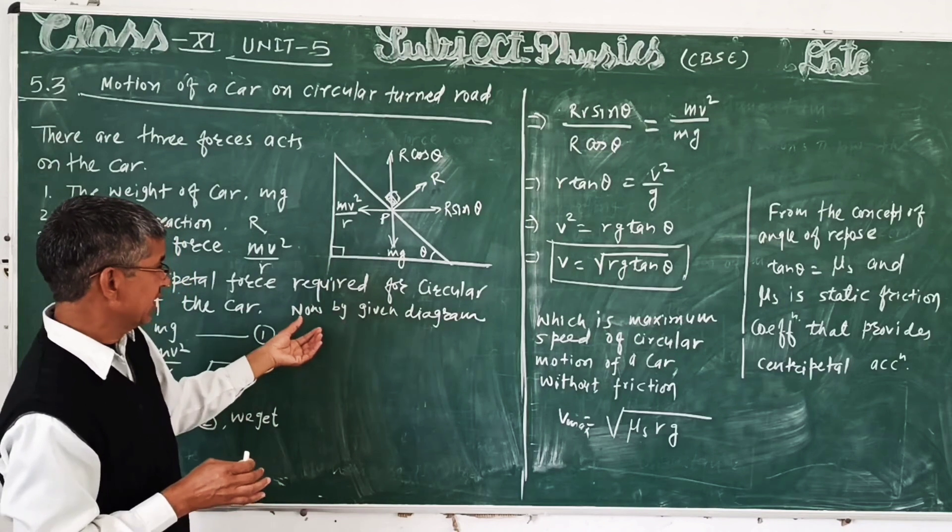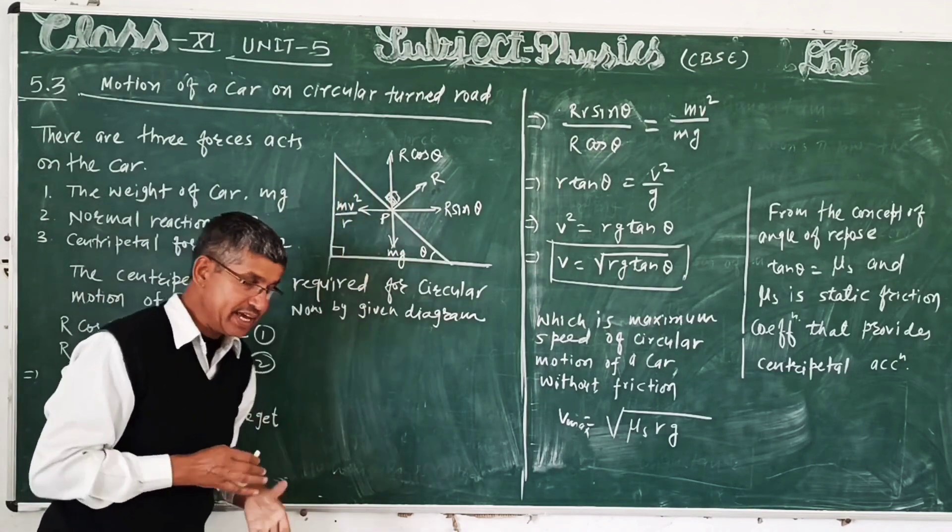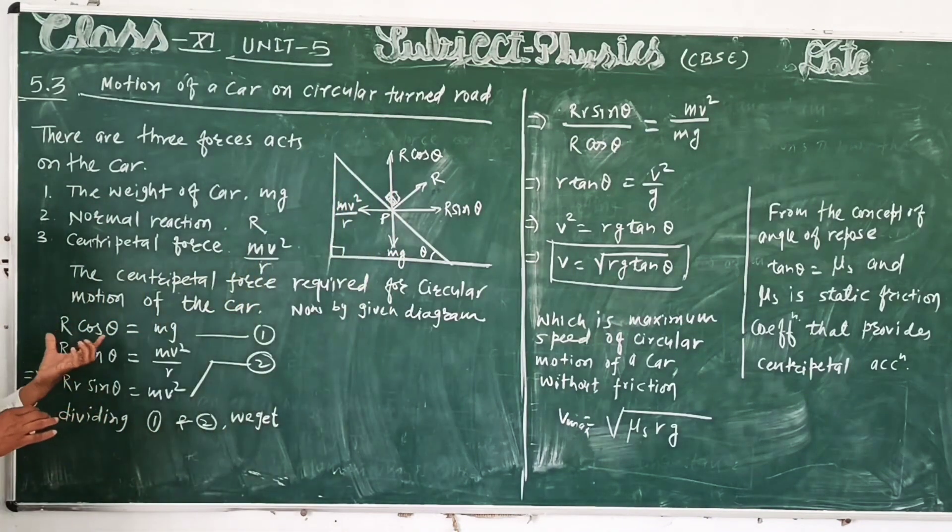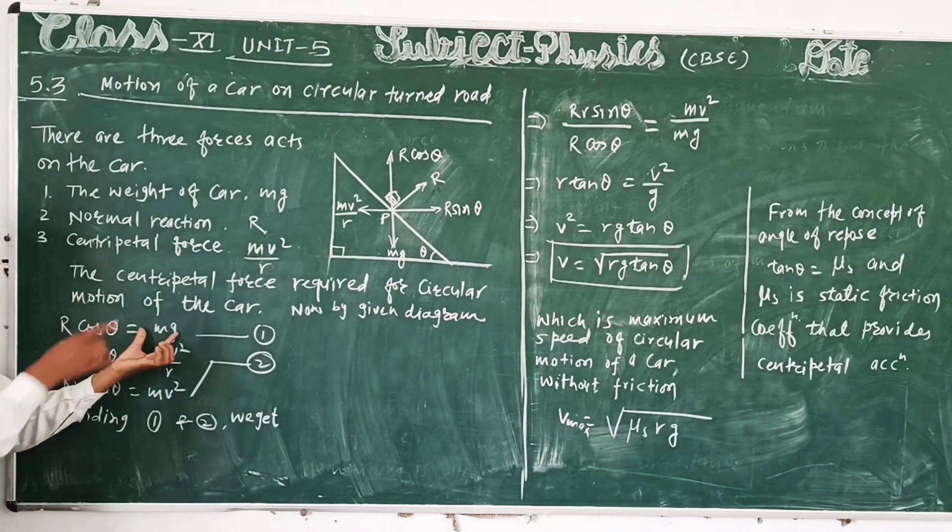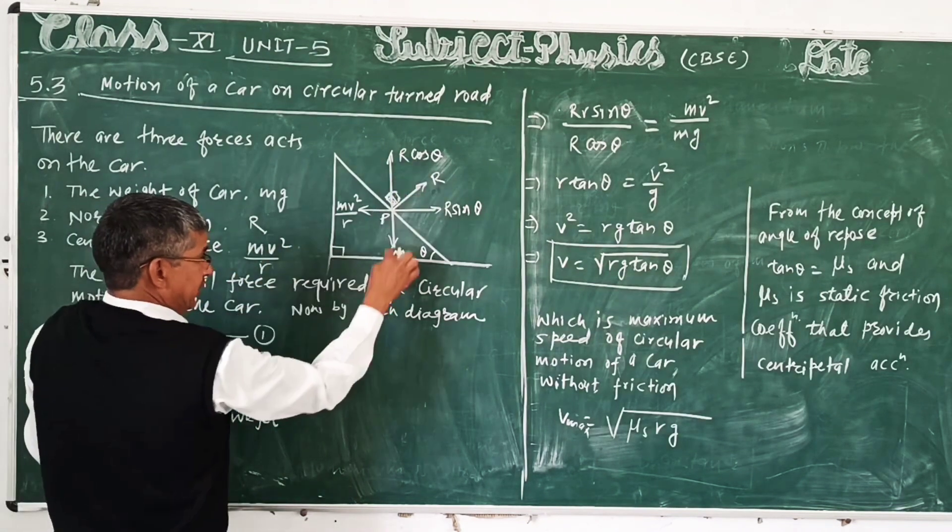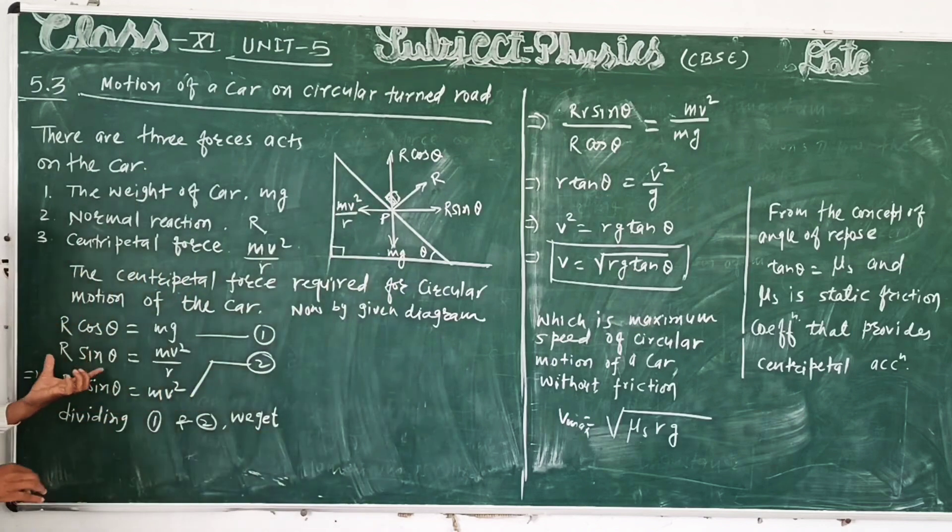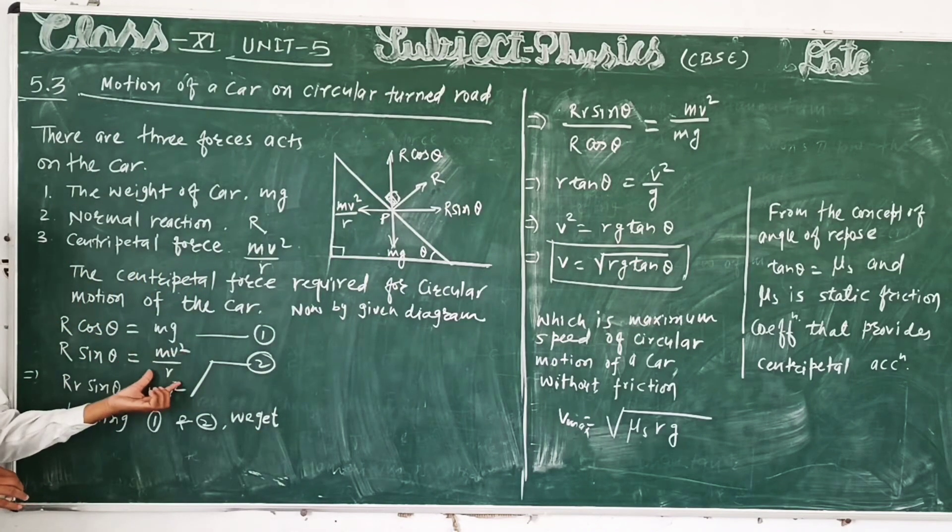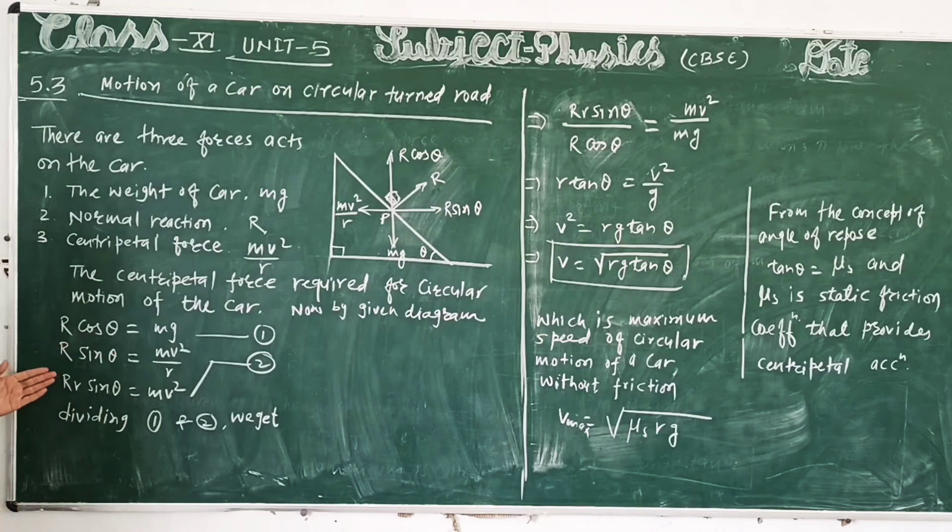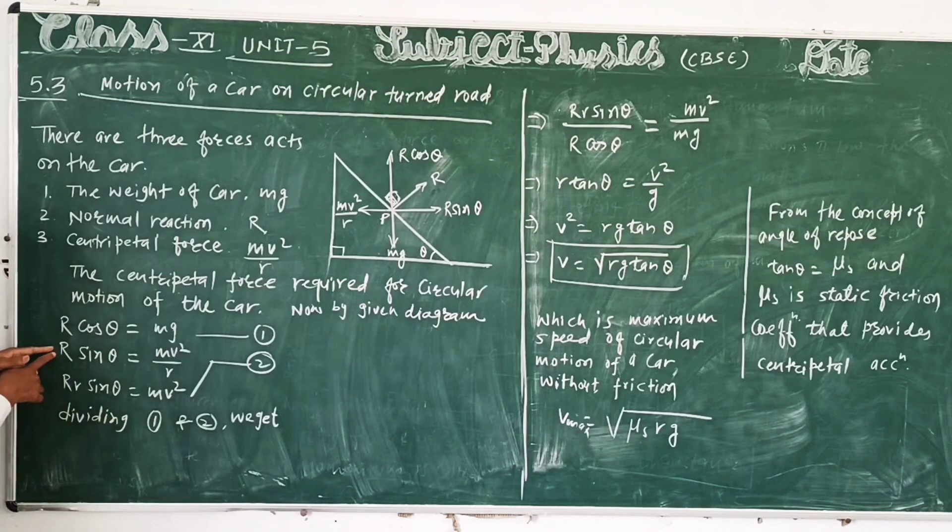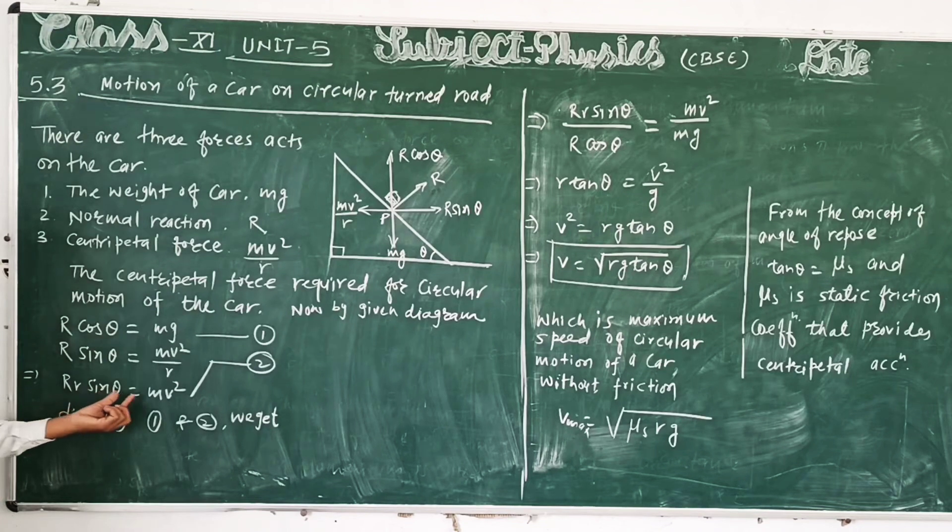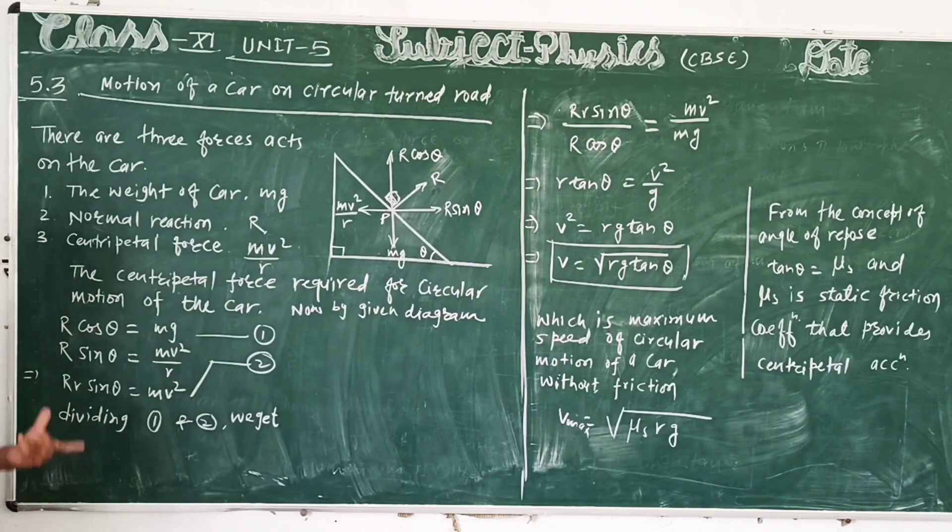From this diagram we take R cos theta equal to mg, both balance here, and R sin theta equal to mv²/r. Next, equation 2 divided by equation 1.